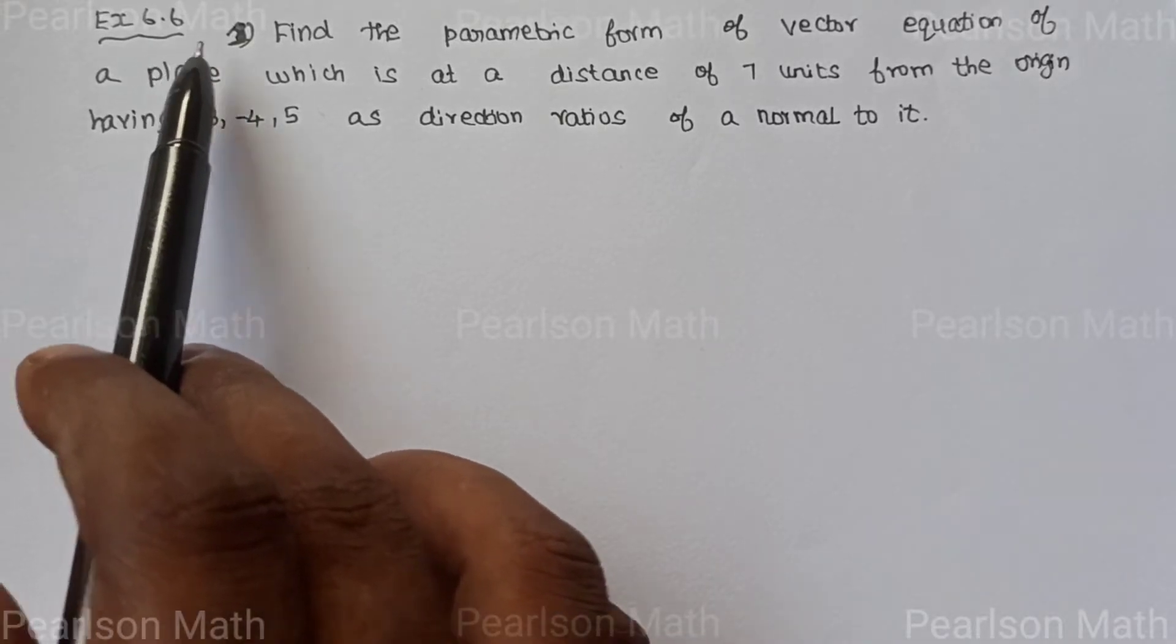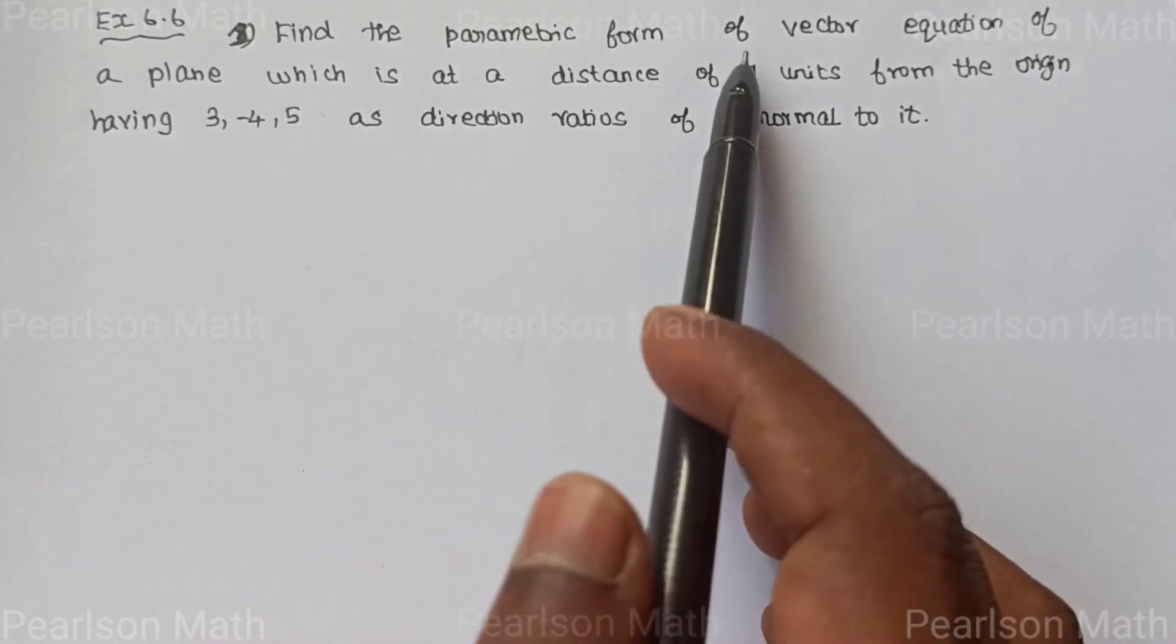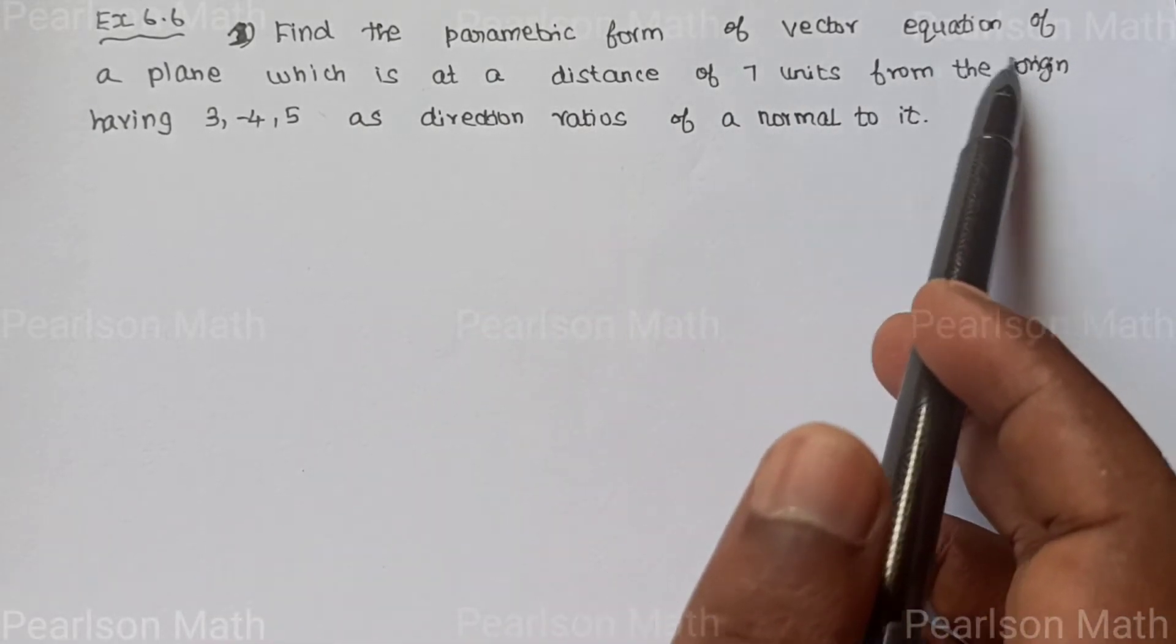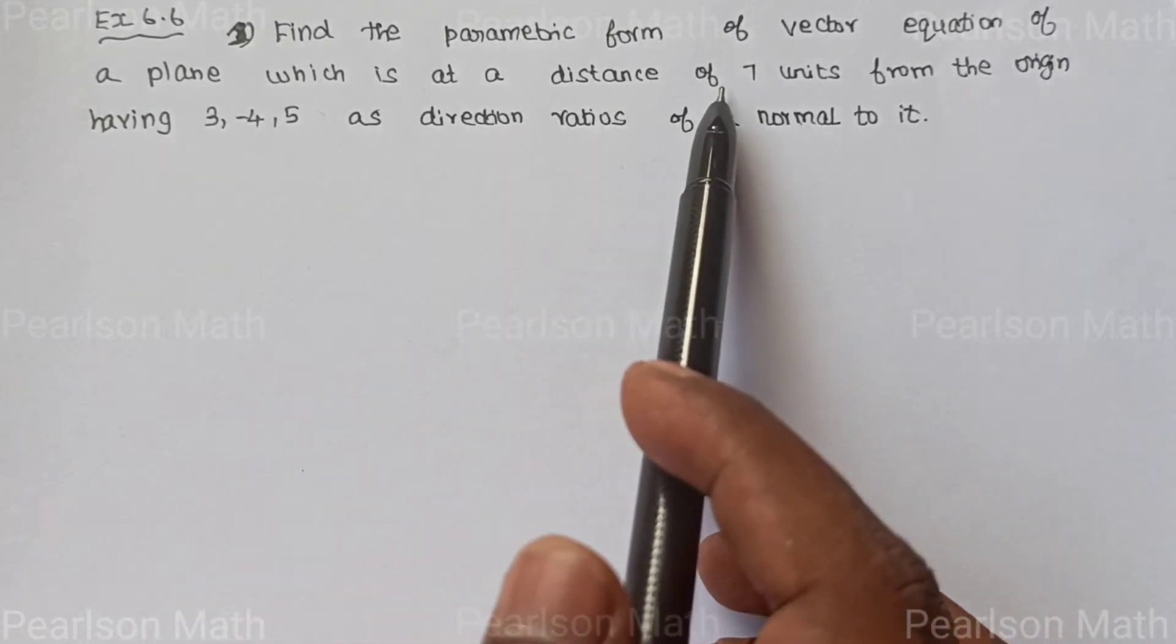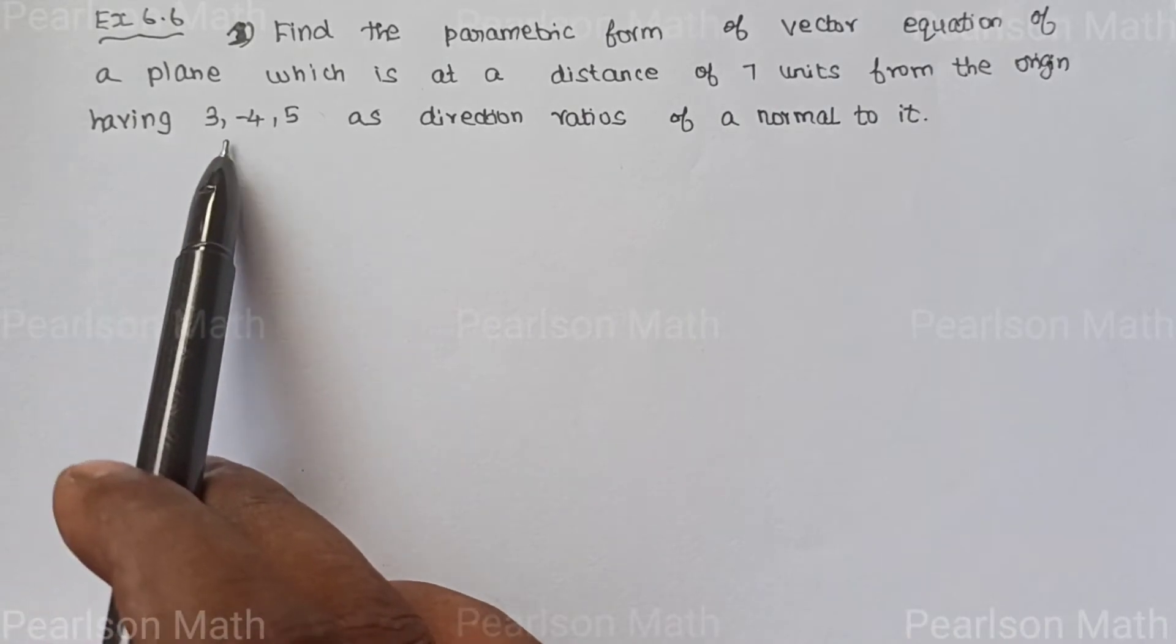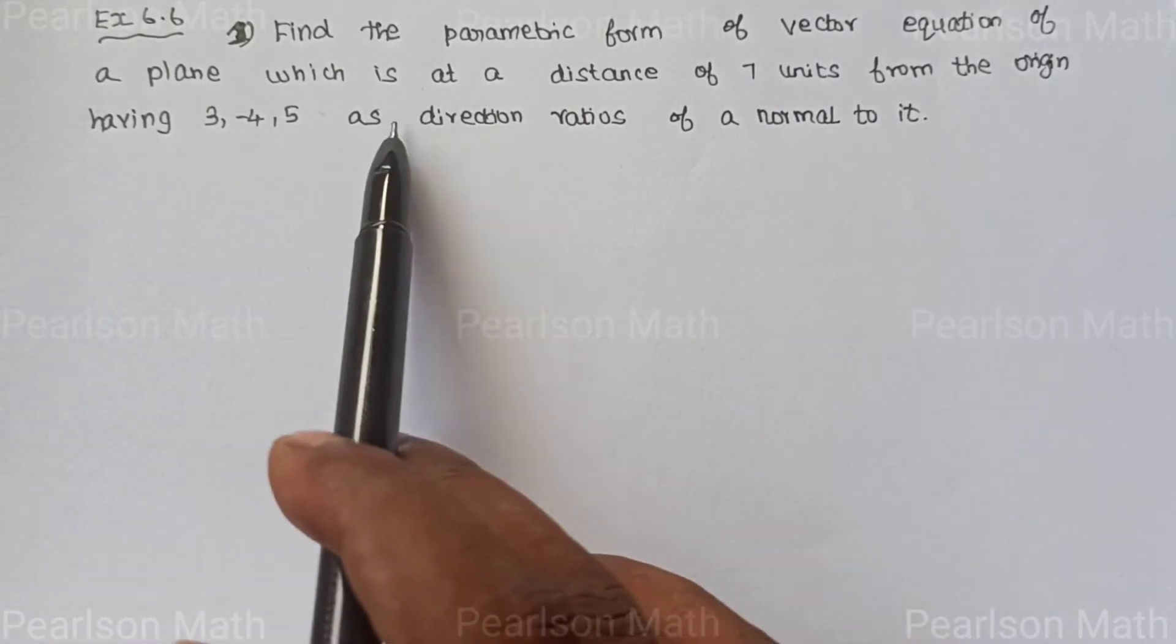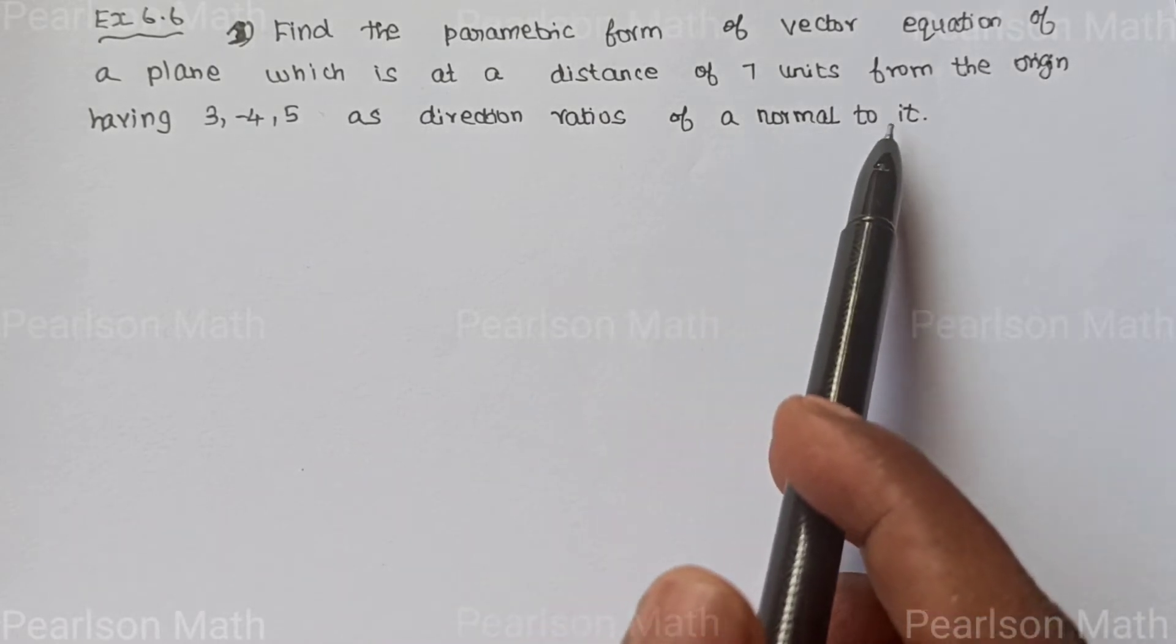Exercise 6.6, first sum. Find the parametric form of vector equation of a plane which is at a distance of 7 units from the origin, having 3, minus 4, 5 as direction ratios of a normal to it.